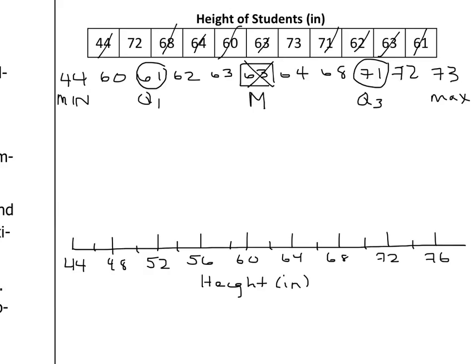Everywhere I see a spot on the number line that corresponds to one of my five number summary numbers, I'm going to place a line. So I've got my min at 44. I've got my Q1 at 61.